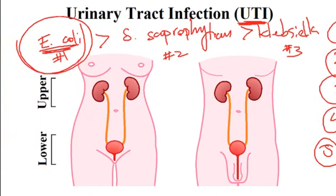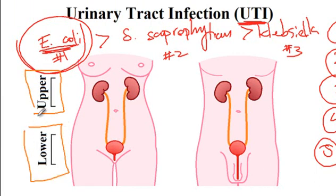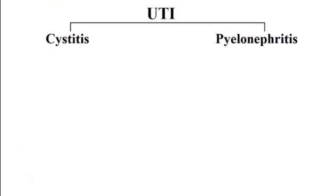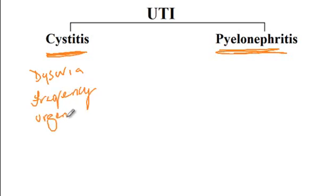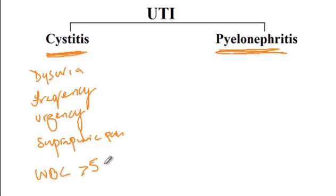Now I'd like to differentiate the clinical presentation of upper versus lower urinary tract infections. Lower urinary tract infection affects the bladder and is referred to as cystitis, while upper urinary tract infection refers to infection of the kidney and is called pyelonephritis. Patients with lower urinary tract infection generally present with dysuria, frequency, urgency, suprapubic pain, as well as a white blood cell count of more than five to ten on high-power field of microscopic examination.